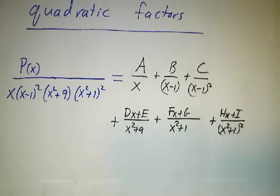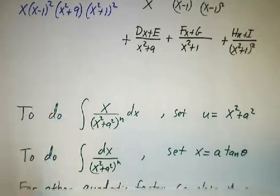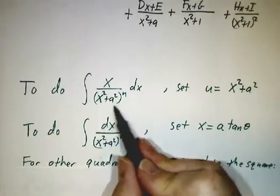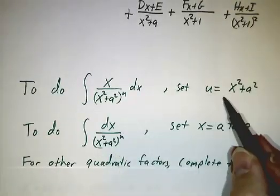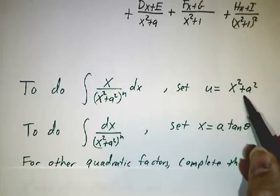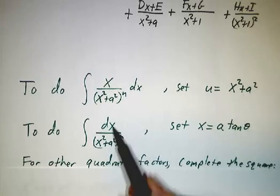And then when you have to integrate all of these, whenever you have to integrate an x over a quadratic thing, you do a u substitution, where u is x squared plus a squared. When you don't have an x, you do a trig substitution, x equals a tangent of theta.